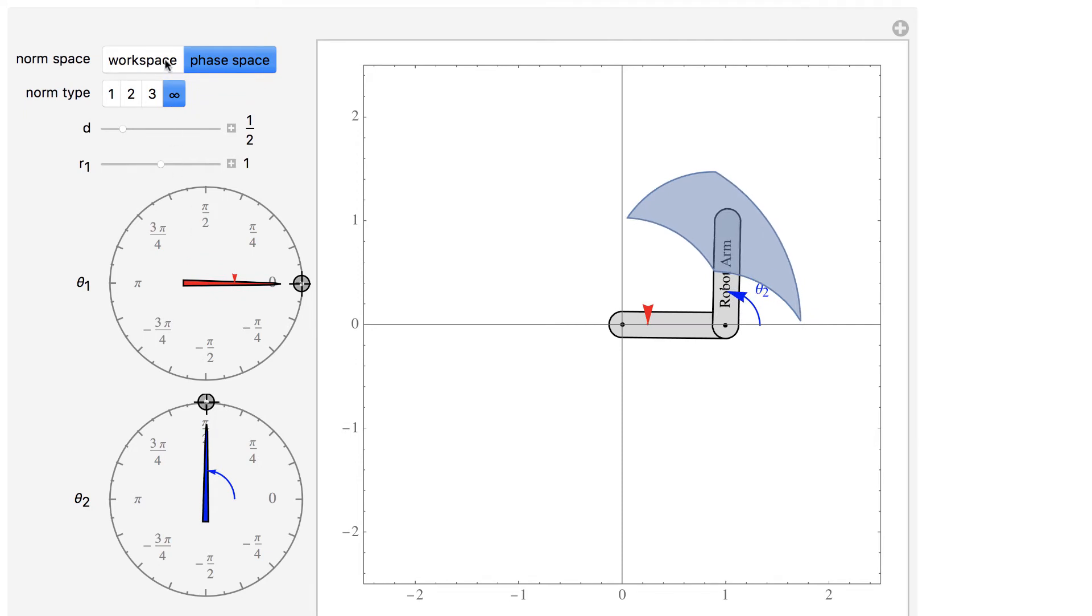You can measure distance in either the workspace, which is the xy location shown, or in the phase space, which is the theta1 and theta2 arm angles.